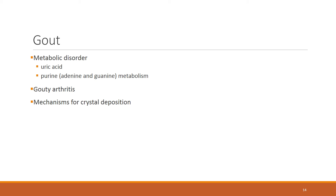Crystals typically deposit in the metatarsophalangeal joint — essentially the big toe. Uric acid crystals are well-formed with very sharp edges, giving them the ability to irritate and damage the joint and cause an inflammatory response. Observation of the metatarsophalangeal joint will reveal erythema, edema, and tenderness to touch.